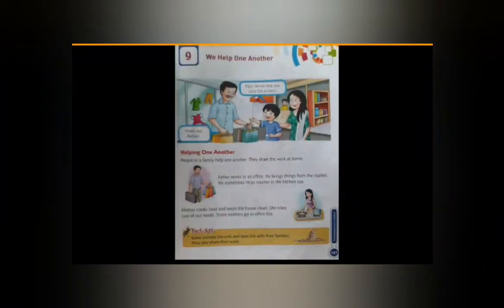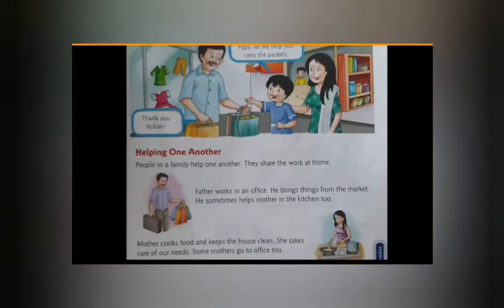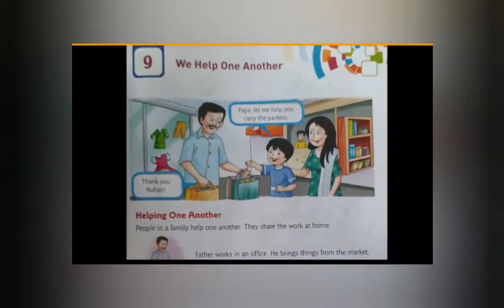Welcome dear students. Today we will start the 9th chapter of Environment. The 9th chapter is 'We Help One Another.' 'We' means our family — our family members help one another.